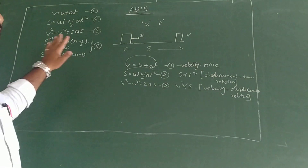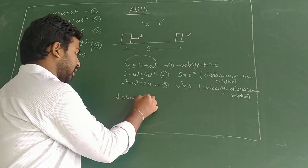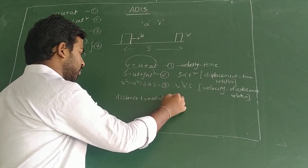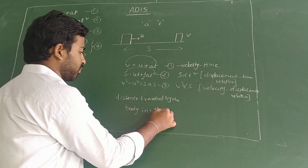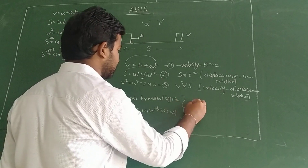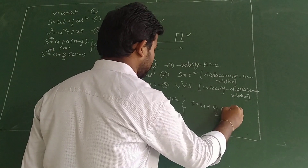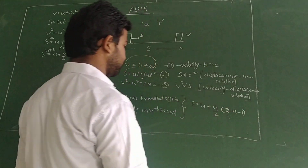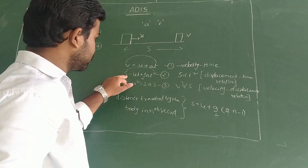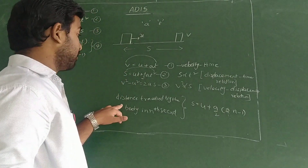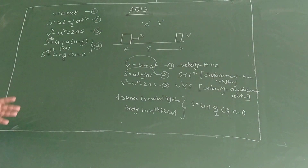When a problem involves velocity and time, choose Equation 1. When it involves displacement and time, choose Equation 2. When it involves velocity and displacement, choose Equation 3. When the problem asks for distance traveled by the body in the nth second, choose the fourth equation: s = u + (a/2)(2n - 1).